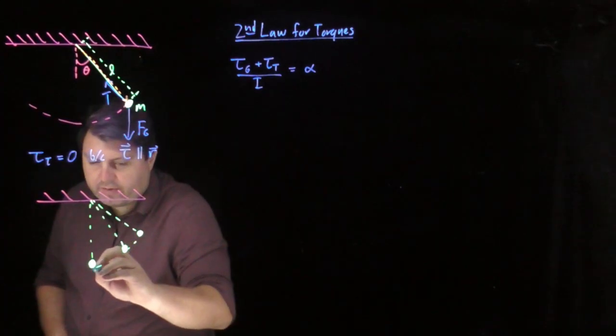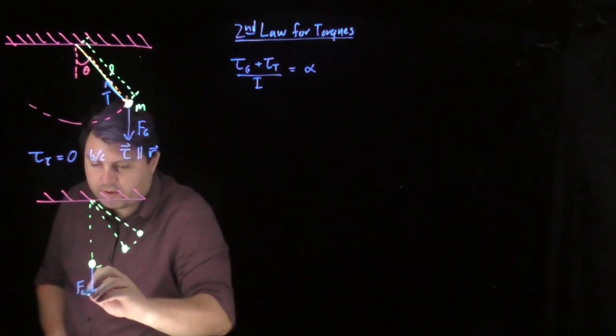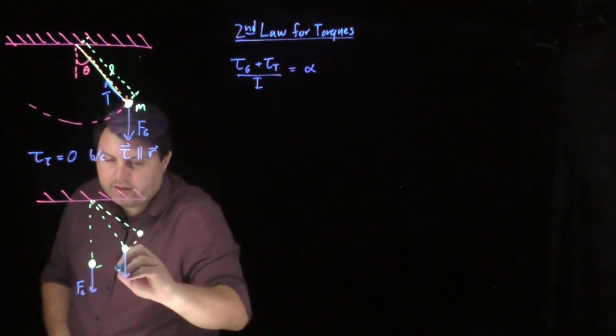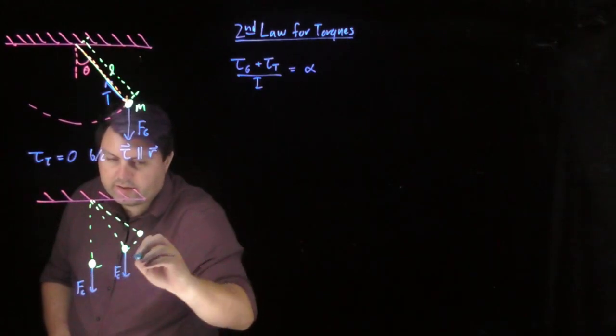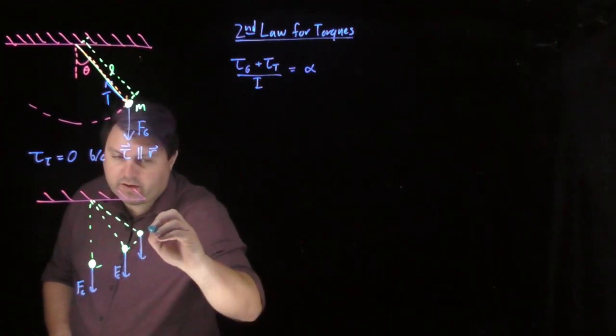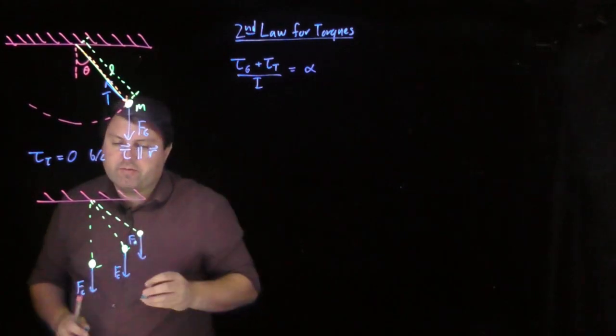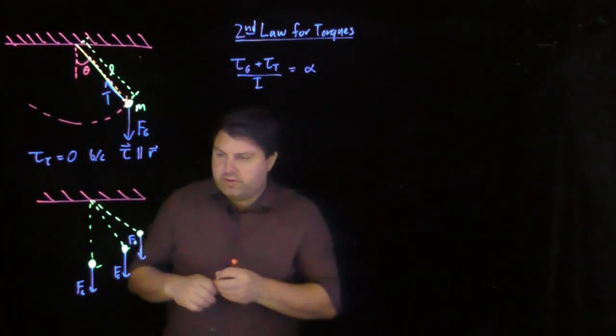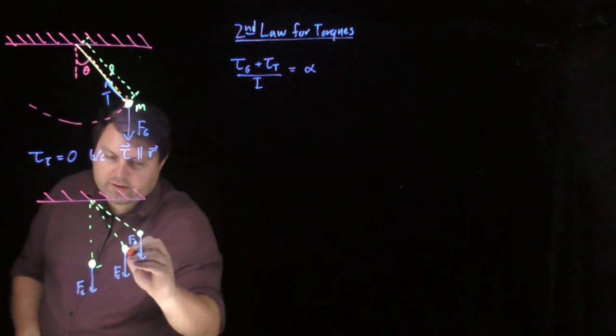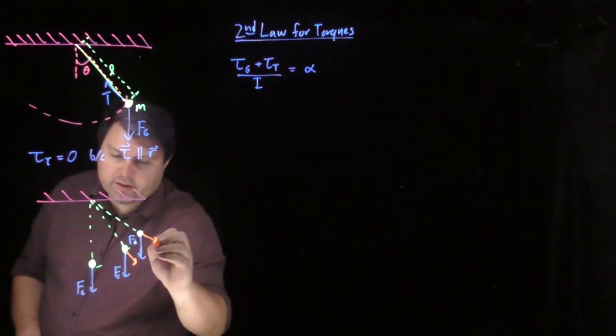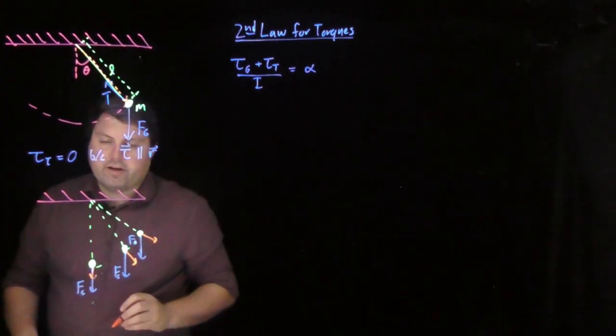So here we have our force of gravity pointed perfectly down, and here perfectly down the same amount, perfectly down the same amount. If we continue this, then our R vector is going to look in this direction, in this direction, and our R vector in this direction.